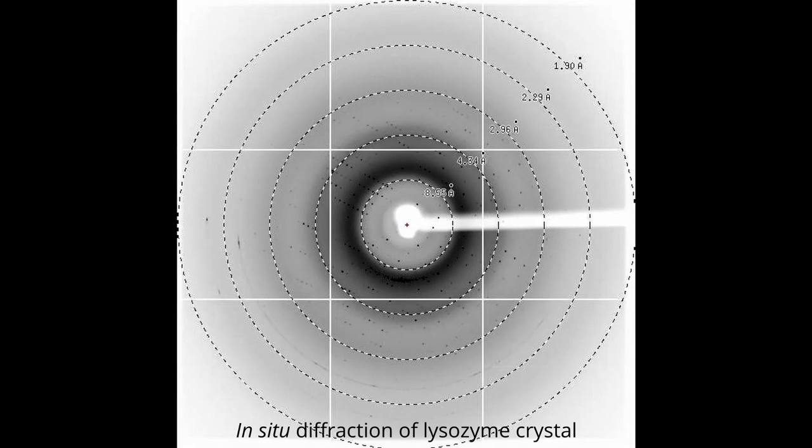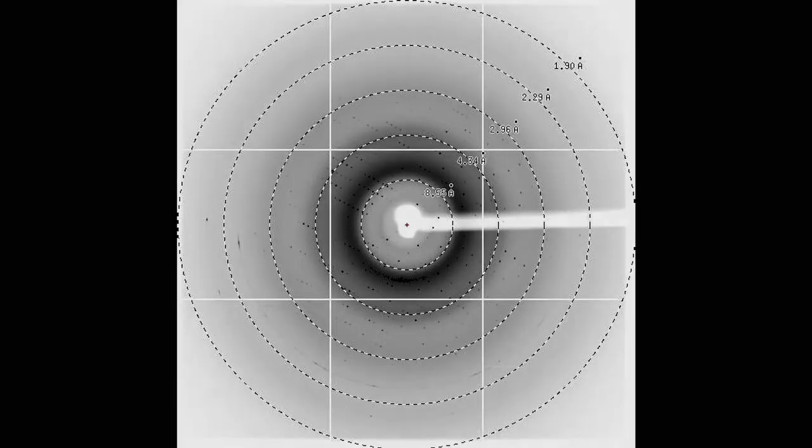Microdialysis enables precise and reversible control over the crystallization conditions. Combined with temperature control, it can be used to decouple nucleation from crystal growth for investigating phase diagrams by changing the precipitant concentration while using the same protein sample.